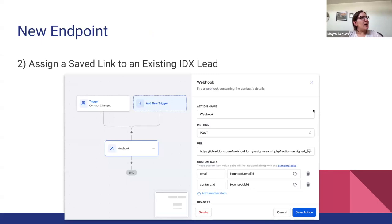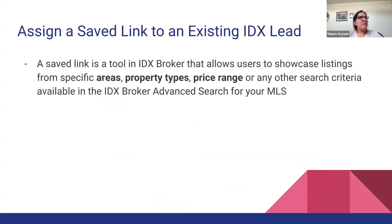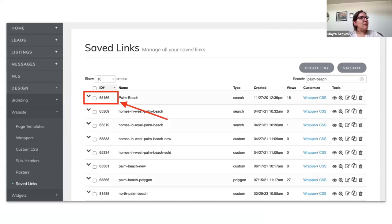Related to how to assign a saved link to an existing IDX lead, it's also very similar — you need to add a trigger, it can be a tag or something else. I wanted to let you know how saved links work in IDX Broker: these are like community pages that allow users to showcase specific listings from a specific area, property types, price range, or any other search criteria available in the advanced search for your MLS.